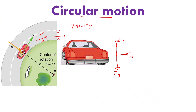If velocity is changing, that means we have to have acceleration. So where is the acceleration for uniform circular motion? We know you cannot have acceleration along the tangent direction, otherwise the velocity magnitude would change. For uniform circular motion, you always have acceleration pointing to the center.